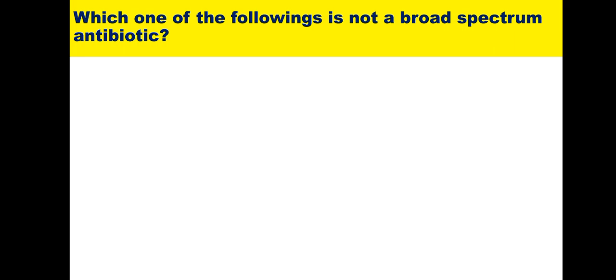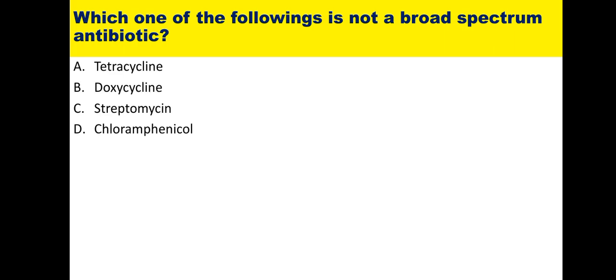Second: which of the following is not a broad spectrum antibiotic? Options are tetracycline, doxycycline, streptomycin, and chloramphenicol. The tetracycline group — including tetracycline, doxycycline, chlorotetracycline, oxytetracycline, tigecycline, and many more — are broad spectrum. Chloramphenicol is also broad spectrum. But streptomycin is an aminoglycoside group drug with a very narrow spectrum. So the answer is streptomycin.